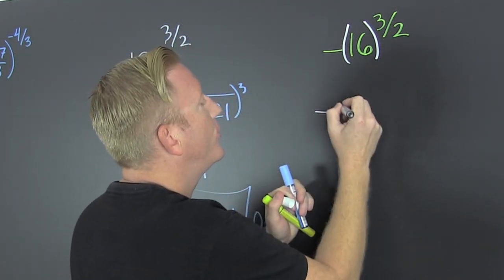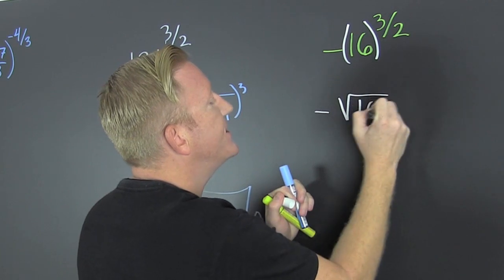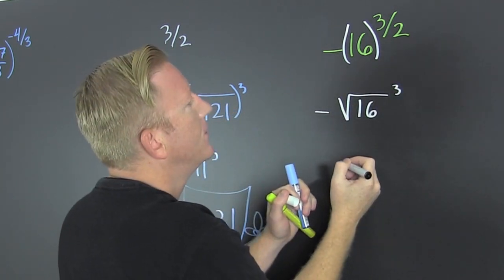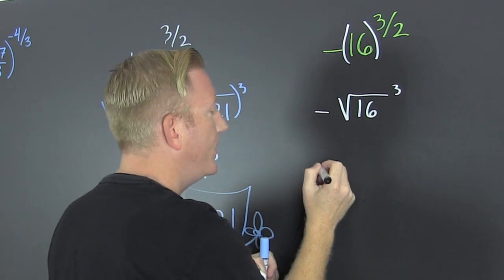So, I have a minus. Wait for it. Square root of 16 to the 3rd. Oh! Whoa, whoa, whoa there.